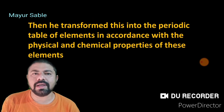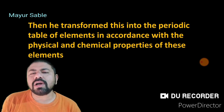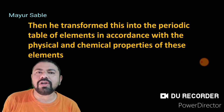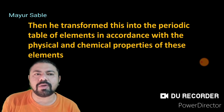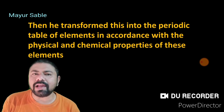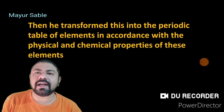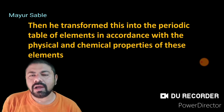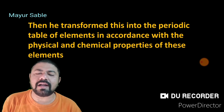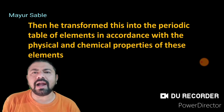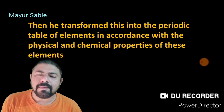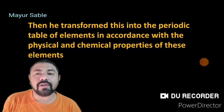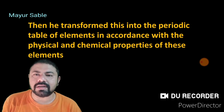Mendeleev organized the periodic table on the basis of physical and chemical properties of elements, including the molecular formulas of hydrides and oxides, melting points, boiling points, and density. Most elements occurred in nature in the form of either hydrides or oxides. By studying these, he found a periodicity in the properties, and categorized all 63 known elements into a periodic table.